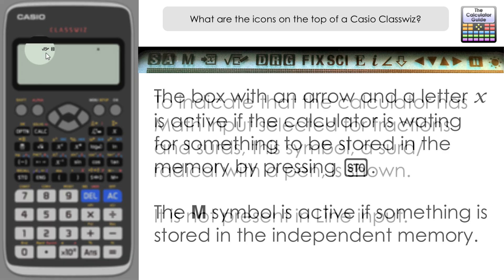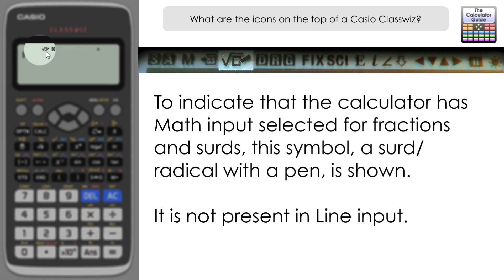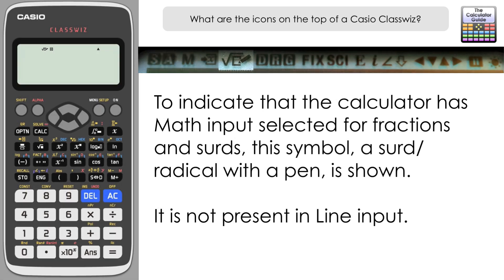The next symbol has been on display all the time: it's a root or radical sign with a pen next to it. This indicates that we are in math input — or more specifically in this case, math input output — which is the natural display where you can display fractions, surds, radicals and so on on the calculator screen.